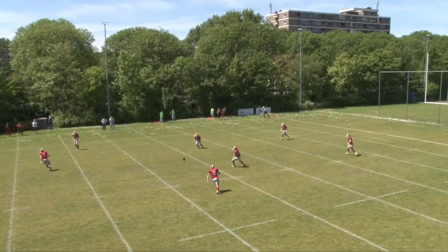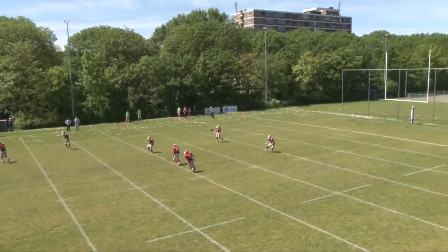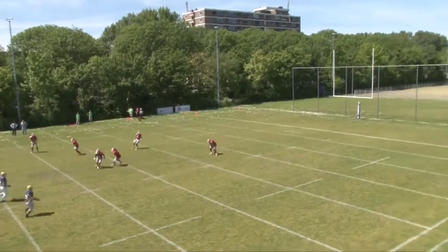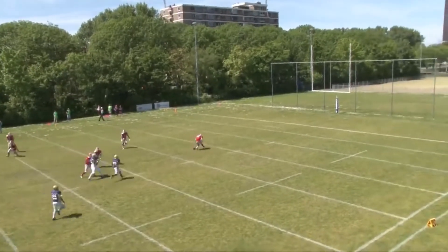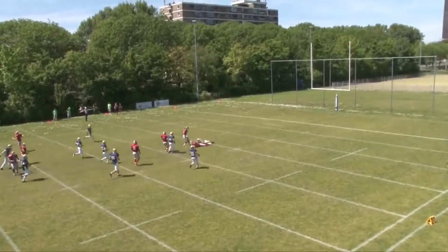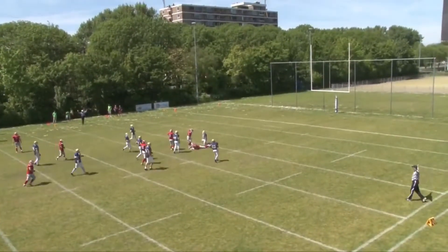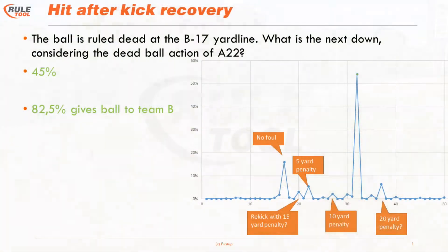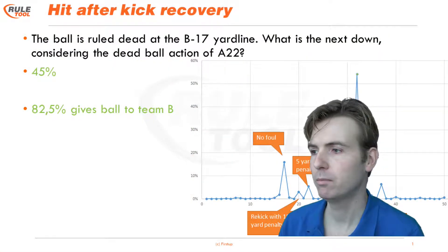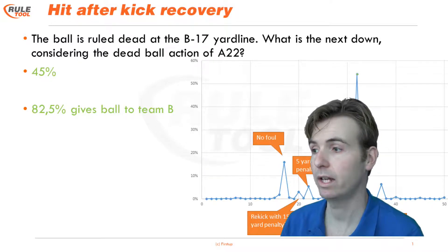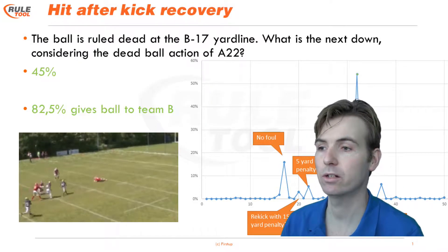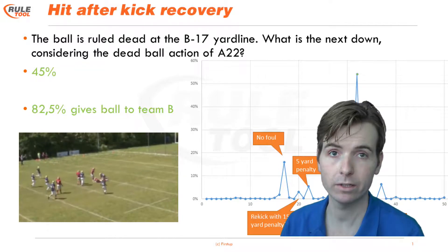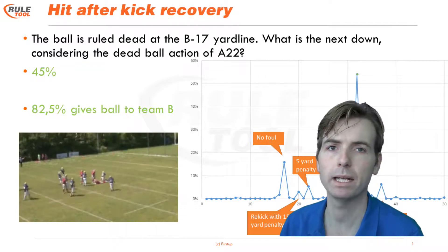This is a question about the contact on this free kick play against the receiving team player who recovered the ball. As you can see, the ball is ruled dead at the B17 yard line. What is the next down considering the dead ball action of A22, who hits the receiving team player?